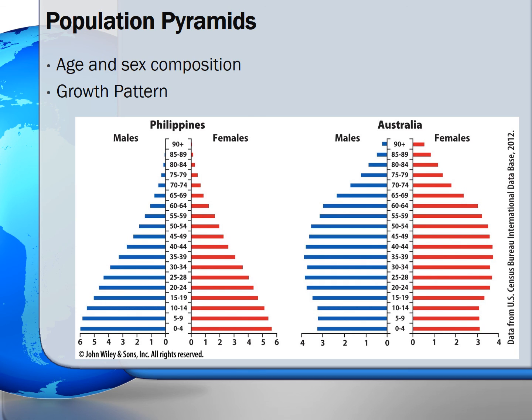The bottom bar shows the percentage of the total population of each age increment. For example, if you look at the population pyramid for the Philippines on the left, looking at the most bottom bar, about 6% of the population is between the ages of birth and 4.